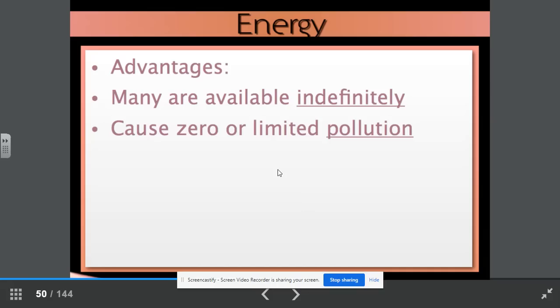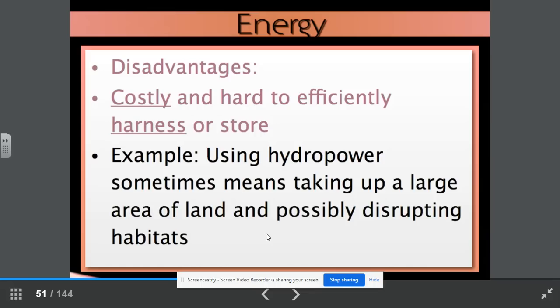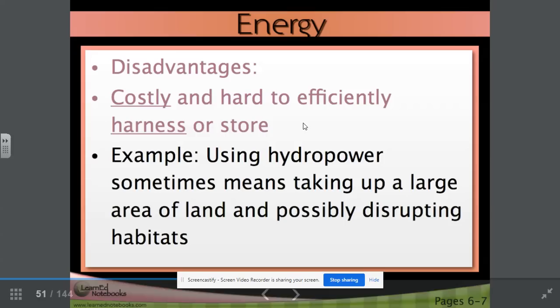An example, using hydropower sometimes means taking up a large area of land and possibly disrupting habitats. That is a disadvantage. It's important to remember that renewable energy sources do have disadvantages as well. They are costly and can be hard to efficiently harness the energy or store it. Also, they rely on ideal conditions. If you're relying 100% on solar power, it's not going to work at nighttime or on cloudy or rainy days.